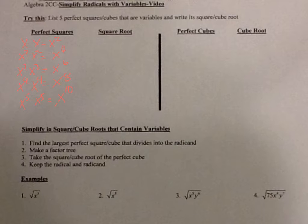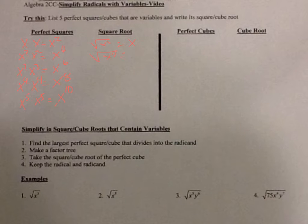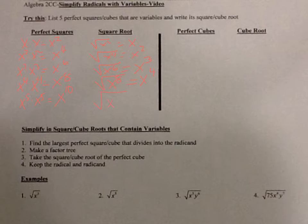Now, what would be the square root of each? The square root of x squared is x. The square root of x to the fourth is x squared. The square root of x to the sixth is x to the third. The square root of x to the eighth is x to the fourth. The square root of x to the tenth is x to the fifth.